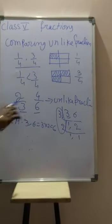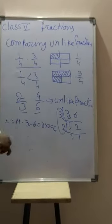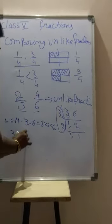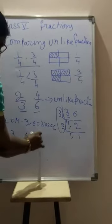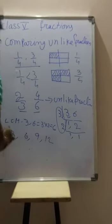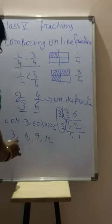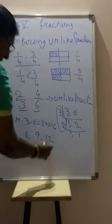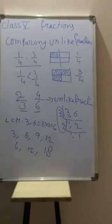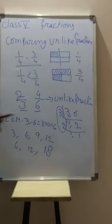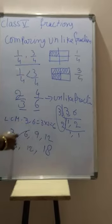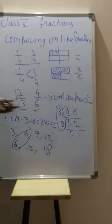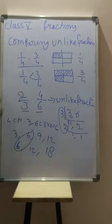You can find it by listing multiples. Write the multiples of 3: 3, 6, 9, 12... Now take the multiples of 6: 6, 12, 18... The LCM — least common multiple — is the smallest common multiple, which is 6. So we can make both denominators equal to 6.